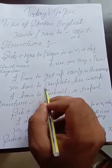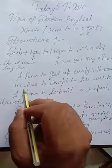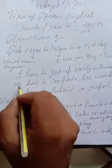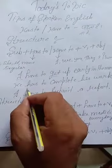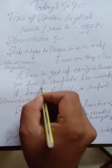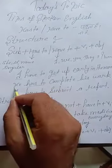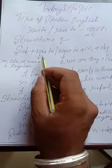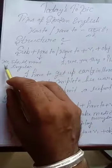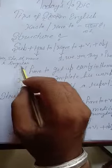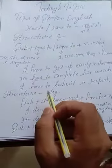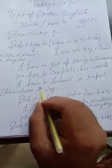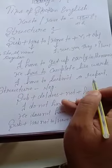'Usay apna kaam complete karna parta hai' — He has to complete his work. Here we use 'has to' because the subject is 'he', which is singular. We use 'has to' with he, she, it, name, and singular. And in the same way, 'Mujhe report submit karwani parti hai' — I have to submit a report.